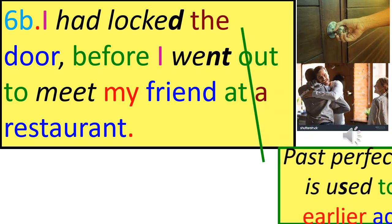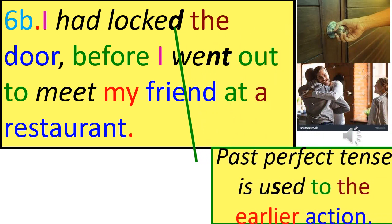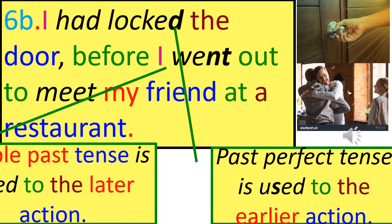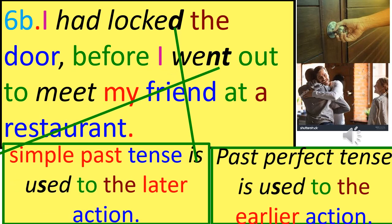Past Perfect Tense is used for the earlier action; Simple Past Tense is used for the later action.